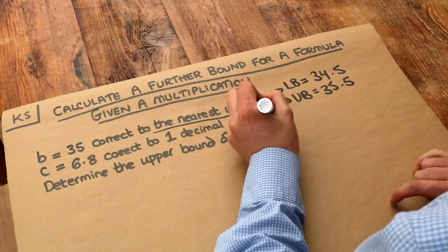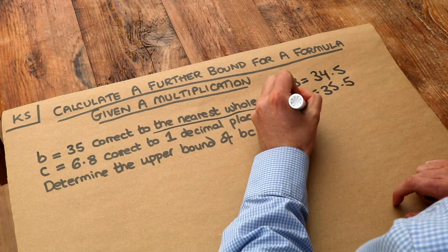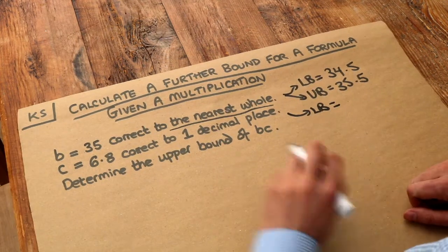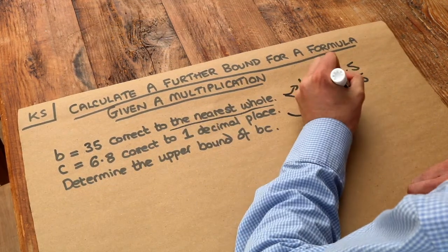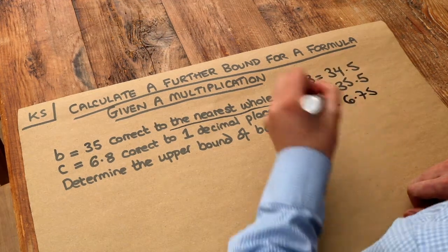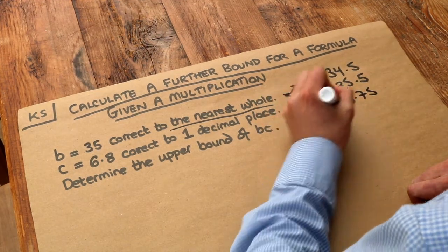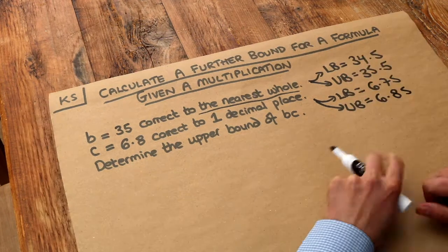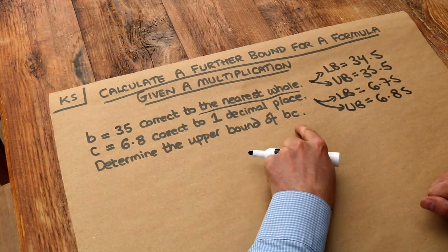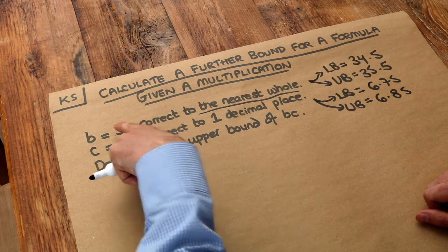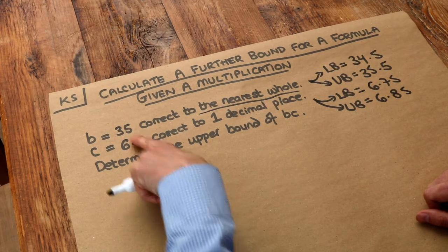So that's just a recap. What about C? What's the lower bound and upper bound? Well, the lower bound is going to be 6.75 and the upper bound is going to be 6.85. And we want to determine the upper bound of BC. Now BC just means B times C, so it's a product of these two numbers, and we want to get the biggest number possible because we want the upper bound of BC.